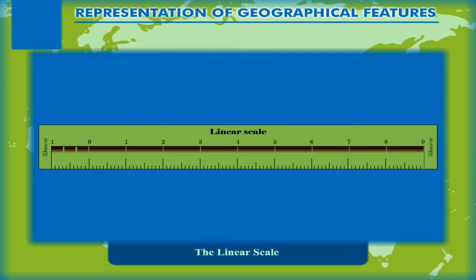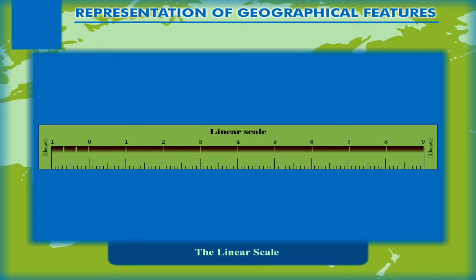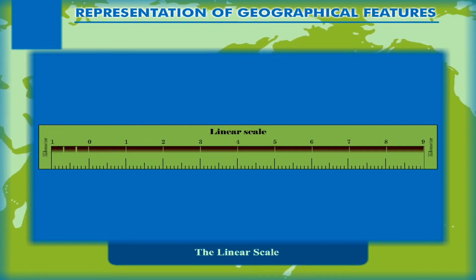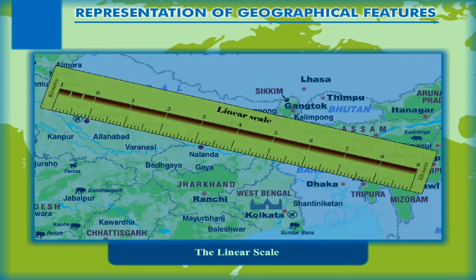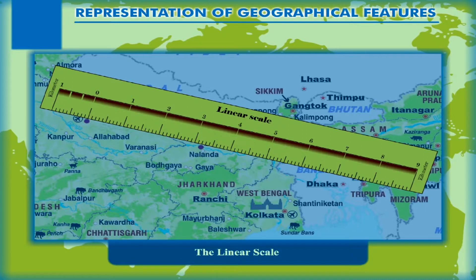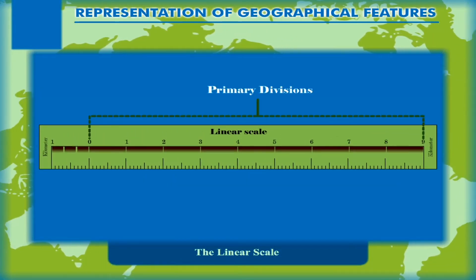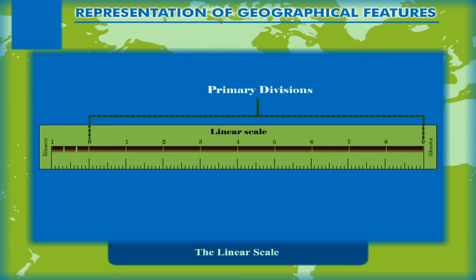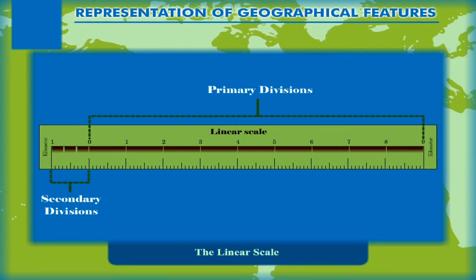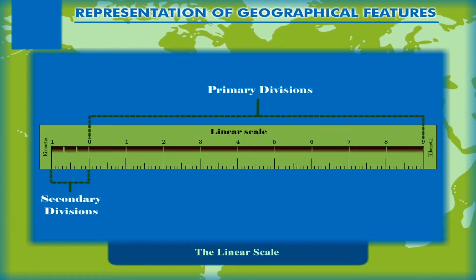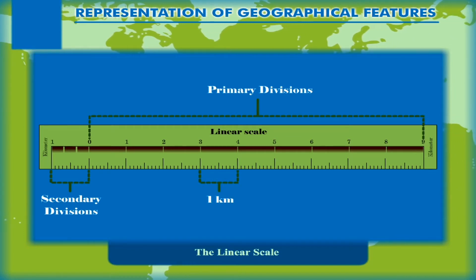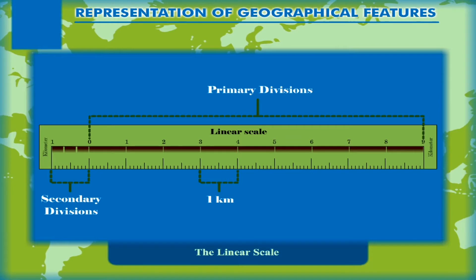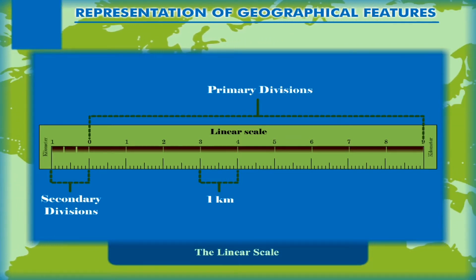The linear scale, also known as the graphical scale, is represented through a graphical drawing with divisions and subdivisions. Each division measures the distance on the map, and the value written along the scale shows the distance on the ground. The larger divisions are called primary divisions, and the zero mark is placed after the first primary division. The first primary division is further divided into smaller secondary divisions. The unit of primary or secondary divisions may be the same or different, such as kilometers and meters.